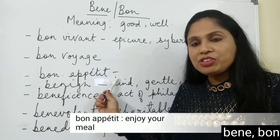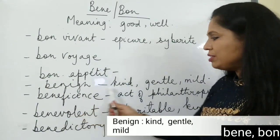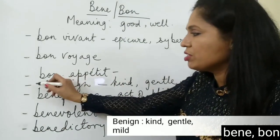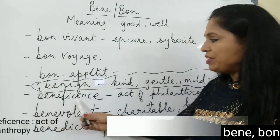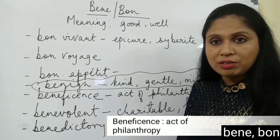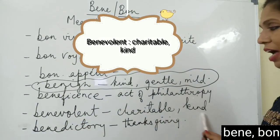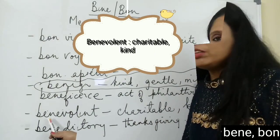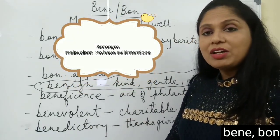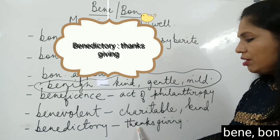Bon appétit is a wish for a person to enjoy his or her meal. Benign means kind, gentle, or mild — all these words are synonymous. Beneficence means an act of philanthropy or social work. Benevolent means charitable and kind. The opposite of benevolent is malevolent, which means to have evil thoughts or evil intentions. Benedictory is a thanksgiving.